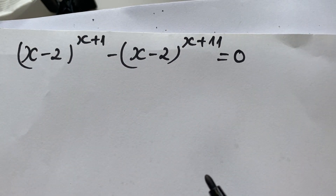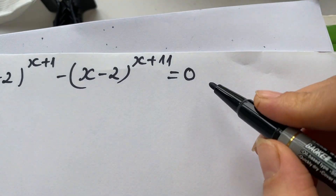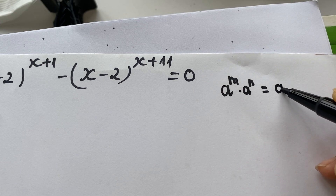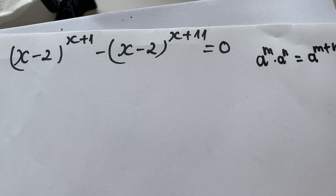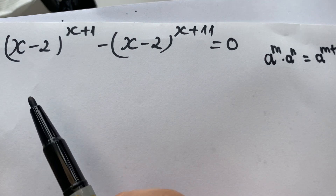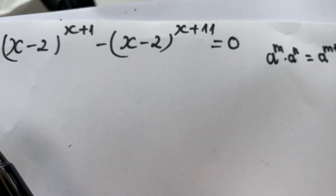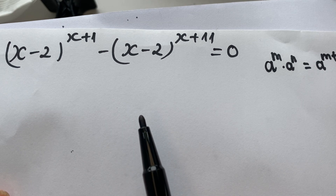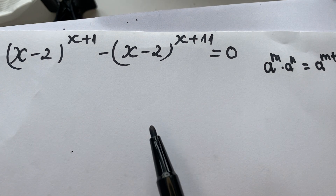Everyone needs to use the exponential rule. We have a to the power m times a to the power n equals a to the power (m plus n). In this case, we need to find the common factor from the two terms: Term 1 is (x minus 2) to the power (x plus 1), and Term 2 is (x minus 2) to the power (x plus 11).